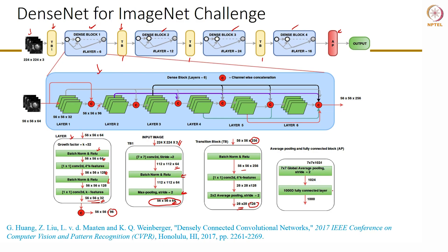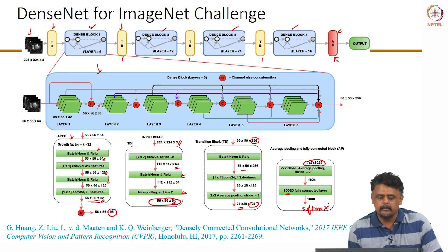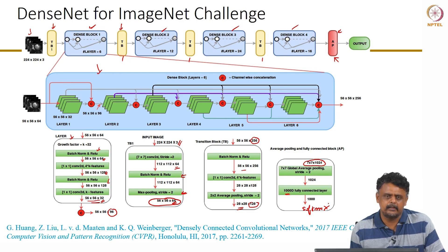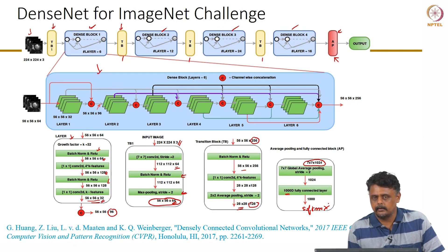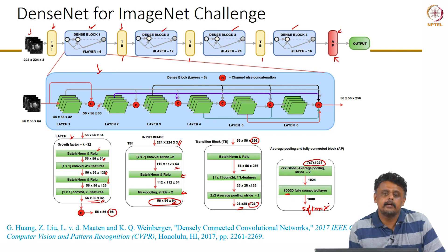After passing through all the dense blocks, the network reaches the average pooling block with 1024 feature maps of size 7×7. Global average pooling is applied, and then a fully connected layer maps to a 1000-dimensional activation followed by a softmax.